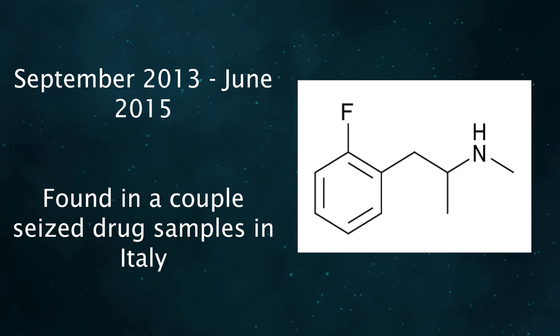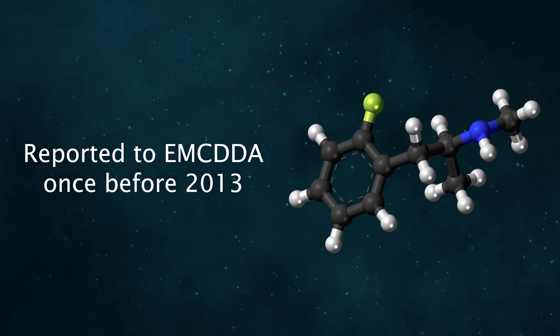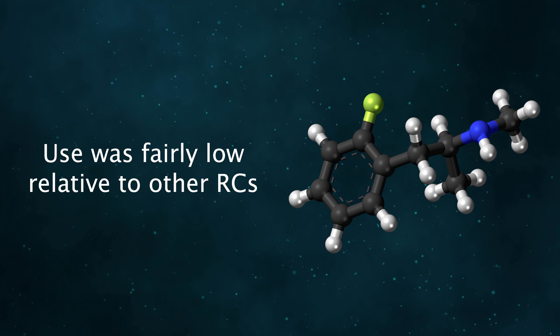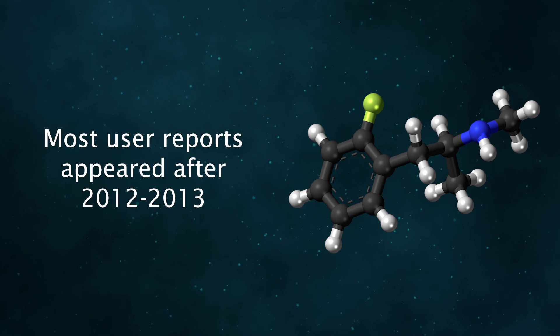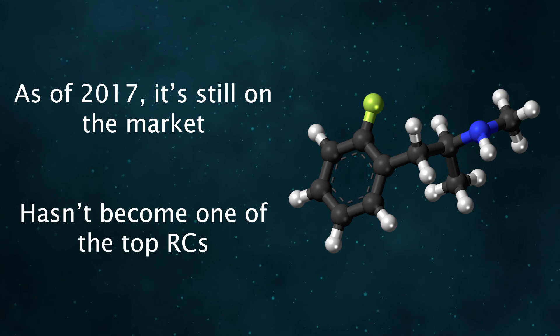From September 2013 to June 2015, 2-FMA was found in a couple seized drug samples in Italy. The drug was only reported to the EMCDDA once before 2013. All of this indicates its use was fairly low relative to other research chemicals up to that point. Most user reports have appeared since around 2012 to 2013. It's never become one of the most common research chemicals. As of 2017, it is still on the market.